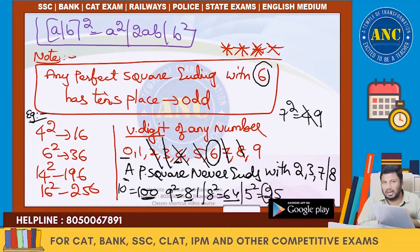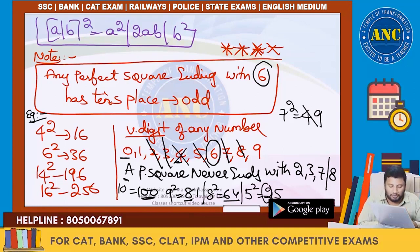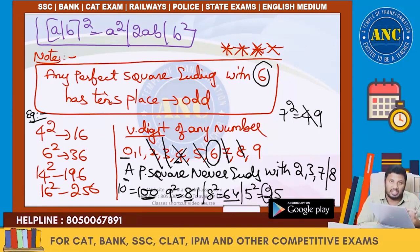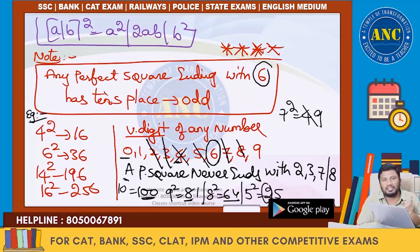For unit digit 0: 10² = 100, 20² = 400 — tens place is even, not possible. For unit digit 1: 9² = 81, 11² = 121, 19² = 361, 21² = 441 — tens place is even. For unit digit 4: 8² = 64, 12² = 144, 18² = 324, 22² = 484 — tens place is even. For unit digit 5: 15² = 225, 25² = 625, 35² = 1225 — tens place is even. For unit digit 6: 4² = 16 (tens digit 1, odd), 6² = 36 (tens digit 3, odd), 24² = 576 (tens digit 7, odd), 36² = 1296 (tens digit 9, odd). Unit digit 6 is the only case where the tens place is odd.